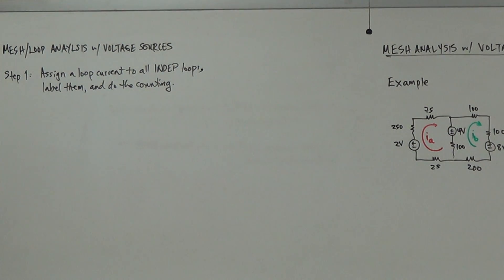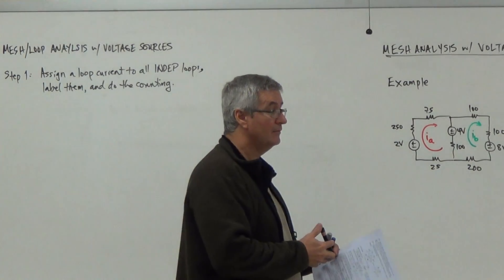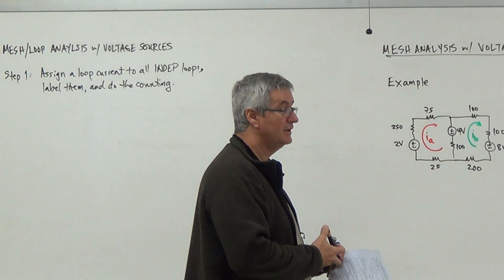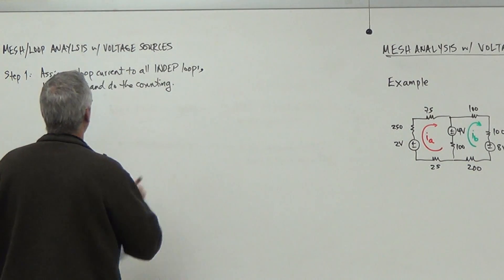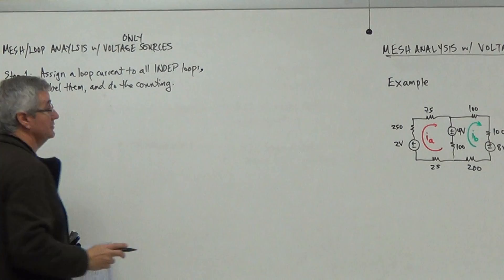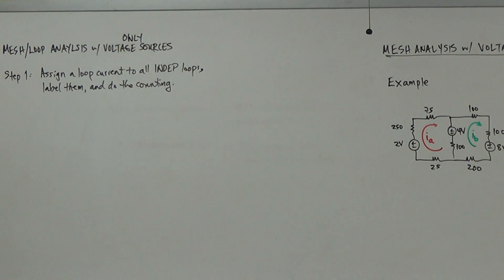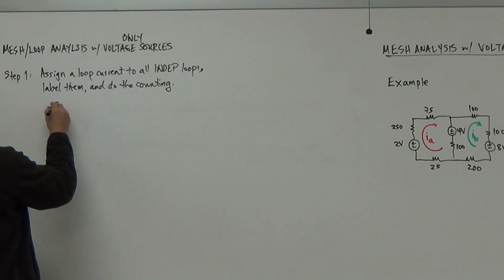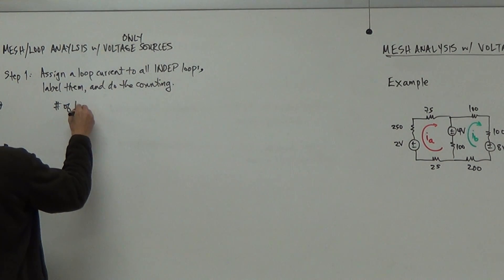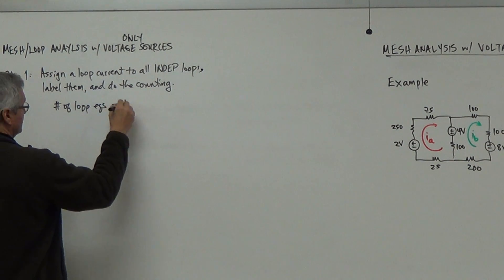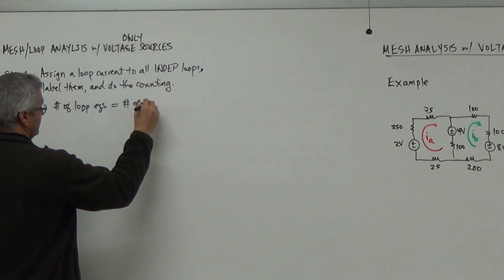What do I mean by do the counting? If I have two loops, I have two loop equations. If I have three loops, I have three loop equations. If I have six loops, I got six loops. Is that only voltage sources? Yes, only. Only voltage sources. So in this case here, the number of loop equations equals the number of independent loops.